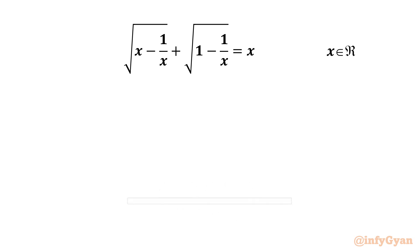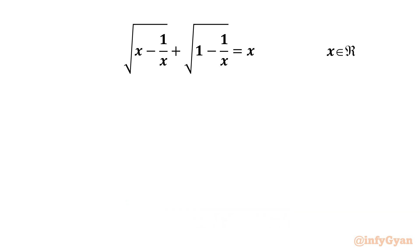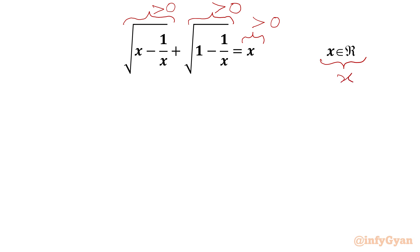Welcome back to Infigyan, my dear friends. Today in this video we are going to solve one very interesting and challenging radical equation from Math Olympiads. Here we are looking for real values of x. The first square root must be positive for real x, and the second square root will also be positive for real x, so our RHS must also be positive. Our answer should be greater than 0.